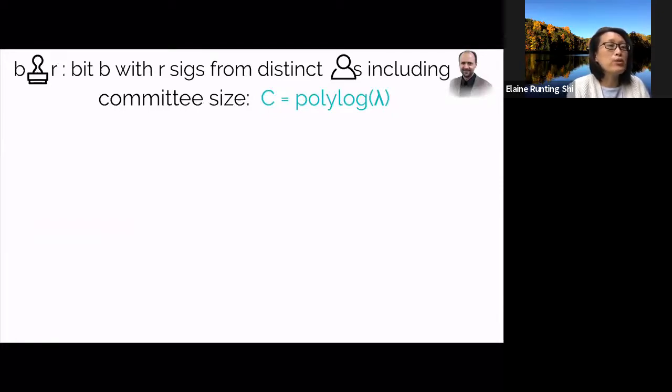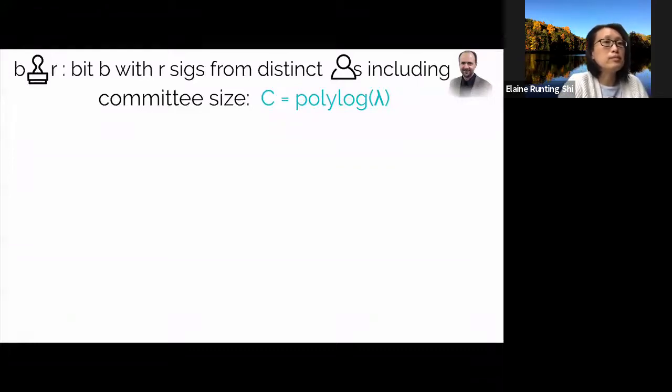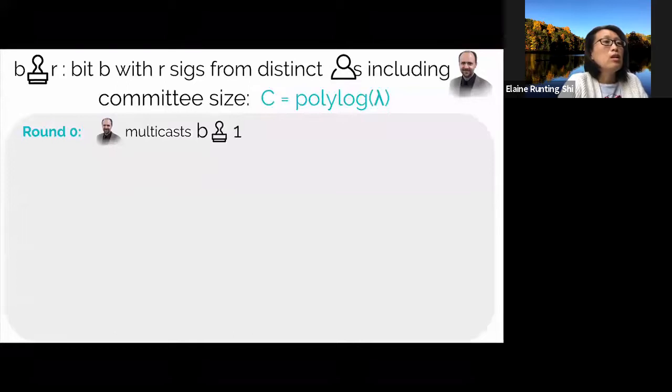Okay, so to understand Dolev-Strong, I will first introduce the notation b ⊙ r. This is pronounced as r-badge of votes on the bit b. It means a bit b bundled together with r signatures from distinct players. And moreover, one of the signers must be the chair himself. In this case, Aguilos is the chair. Also, I'm going to assume that a random committee of size C is elected and C is roughly polylog in the security parameter lambda. Assume that at most 99% of the players are corrupt. We can guarantee that with all but negligible probability, the committee has at least one honest member.